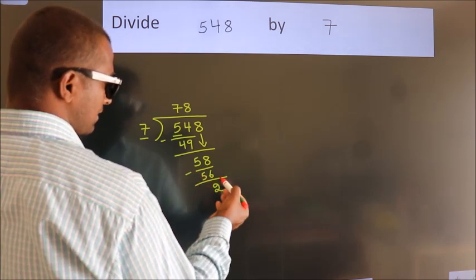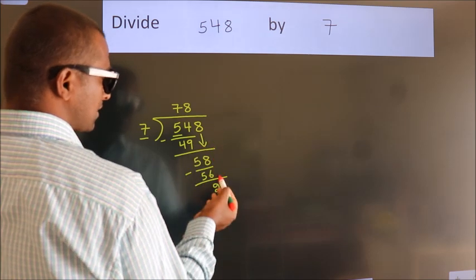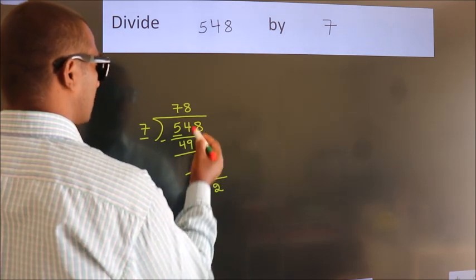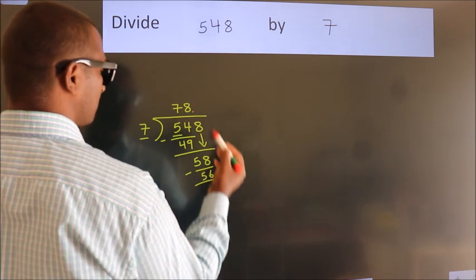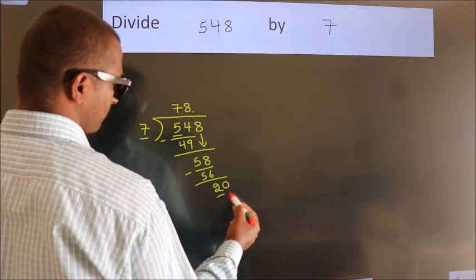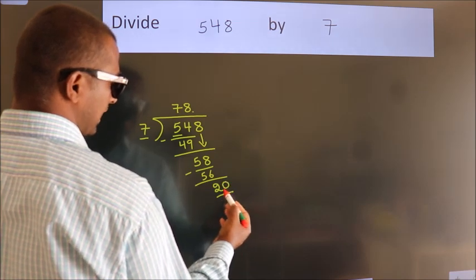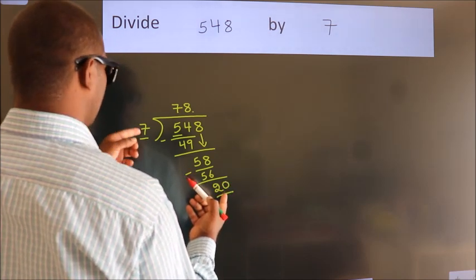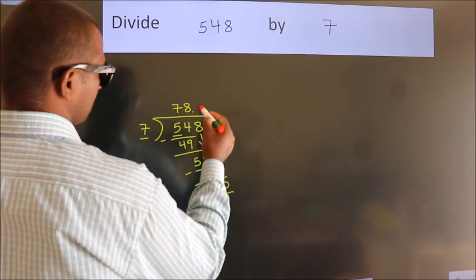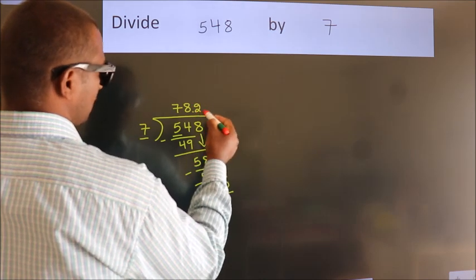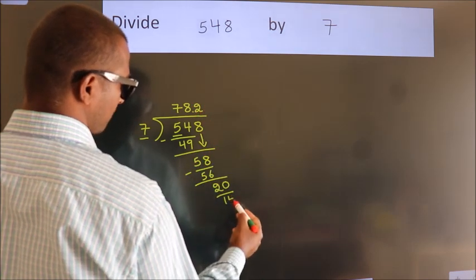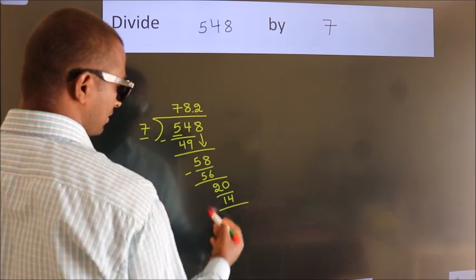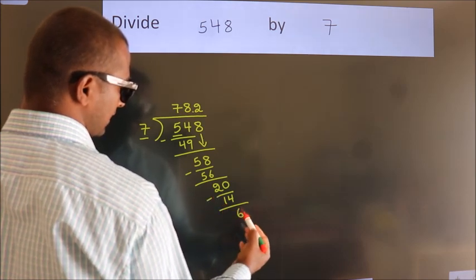After this, there are no more numbers to bring down. So what we do is put a dot and take 0, making it 20. A number close to 20 in the 7 times table is 7×2=14. Now we subtract, and we get 6.